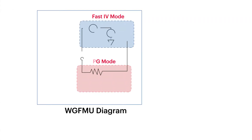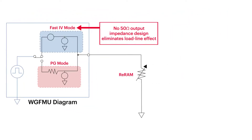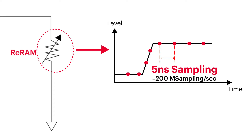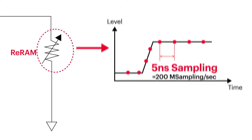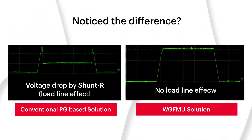The waveform generator/fast measurement unit, also known as WGFMU, enables fast measurements with a maximum of 200 mega samples per second without a low-line effect.